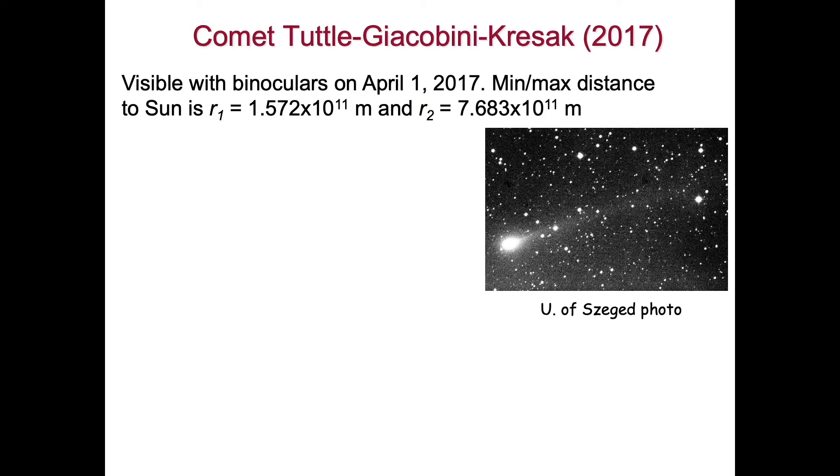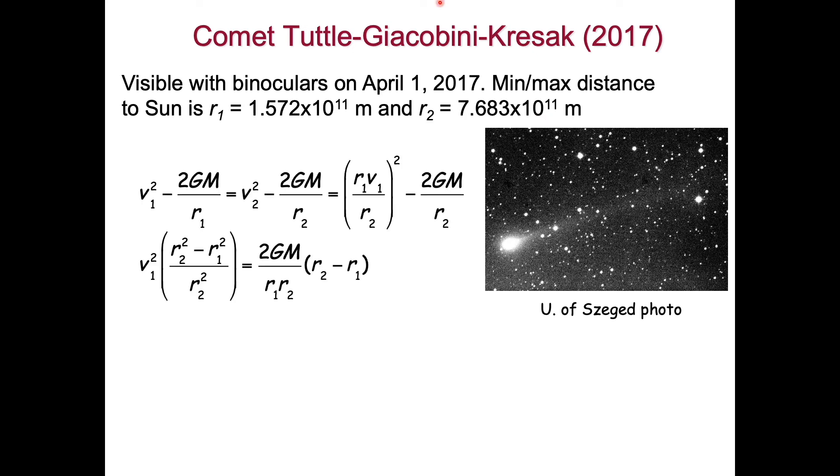Let's do an example: the comet Tuttle-Giacobini-Kresak, which passed by in 2017. It was visible with binoculars on April 1st, 2017. These are the minimum and maximum distances from the sun. The minimum distance was 1.572 times 10 to the 11th meters, and the furthest distance is 7.683 times 10 to the 11th meters. We're going to bring both conservation of energy and conservation of momentum to bear on this problem.